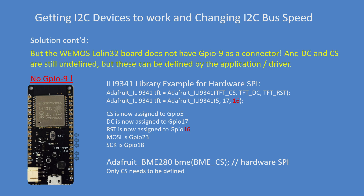Well, that was easy, wasn't it? But reset on my board — this WEMOS LOLIN32 — is actually assigned by the compiler to GPIO 9, but there is no GPIO 9 pin on this board. Now what do I do?